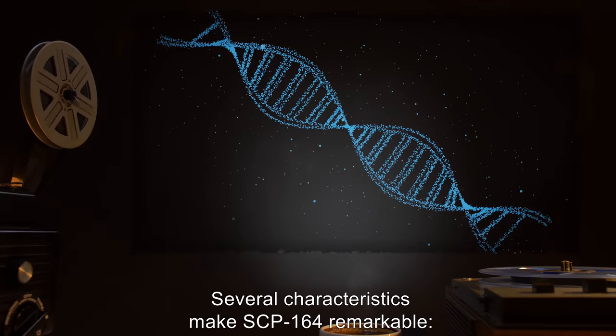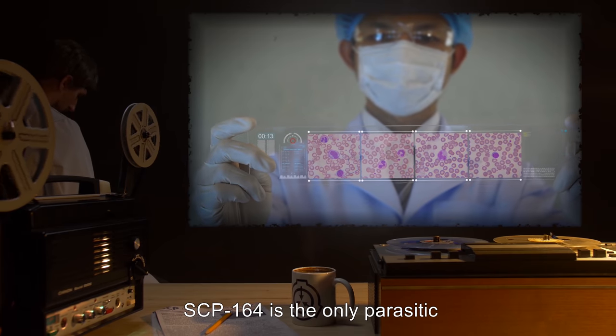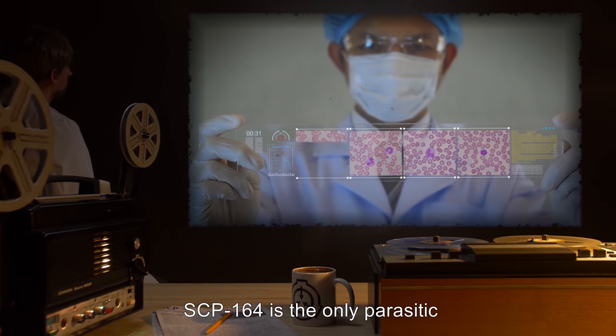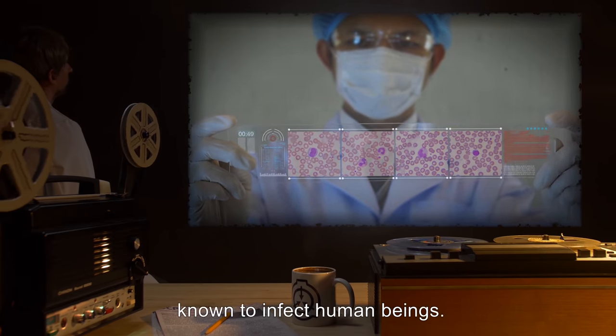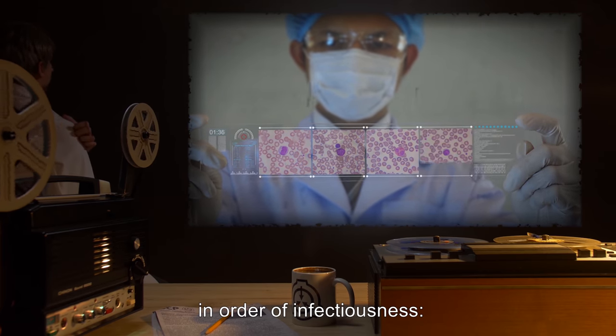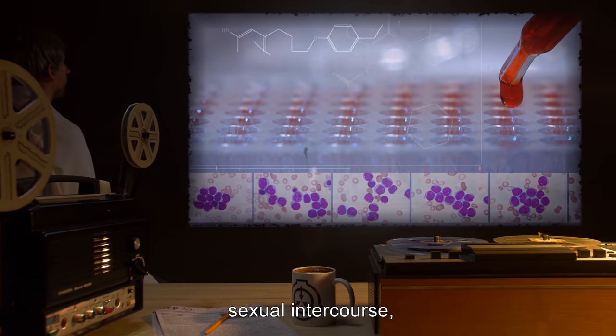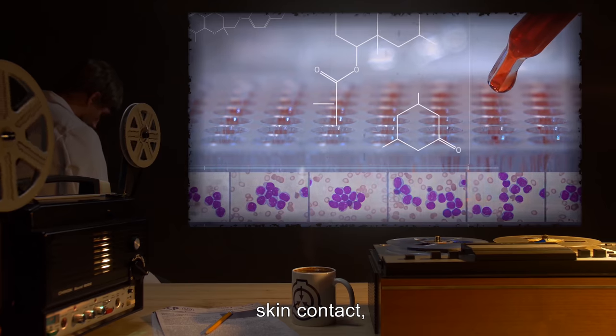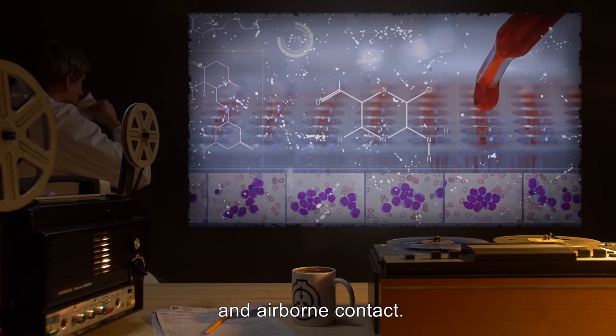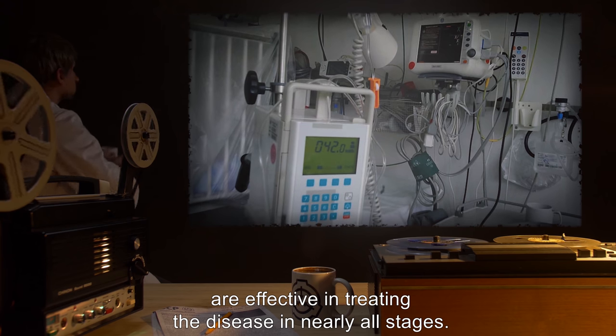Several characteristics make SCP-164 remarkable. SCP-164 is the only parasitic, transmittable cancer known to infect human beings. Strains are transmittable through, in order of infectiousness, blood contact, sexual intercourse, skin contact, and airborne contact. Chemotherapy and surgery are effective in treating the disease in nearly all stages.